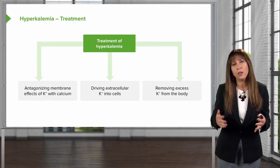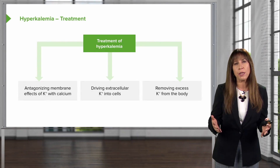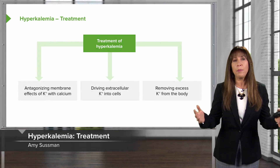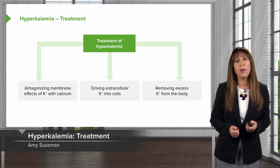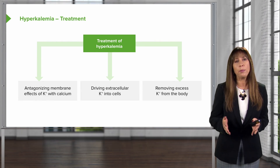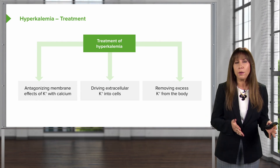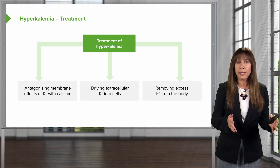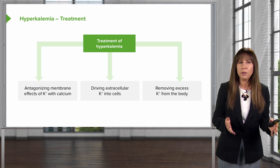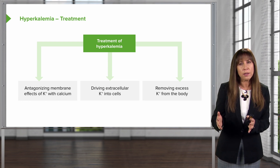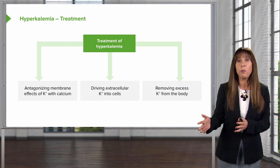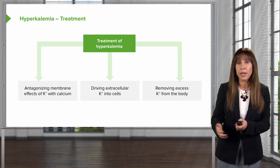Once we've determined the etiology of our patient's hyperkalemia, it's important to treat them urgently and expeditiously. There are a couple of things to keep in mind. Number one, we want to potentially antagonize the membrane effects of potassium with calcium if we're worried about cardiac dysrhythmias. Number two, we can drive the extracellular potassium into cells. And number three, we want to remove that excess potassium from the body.